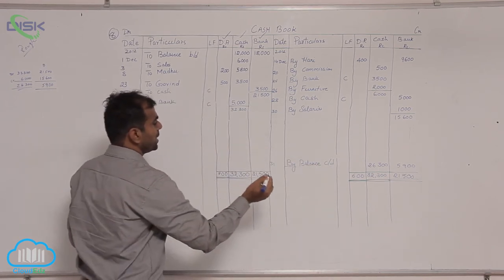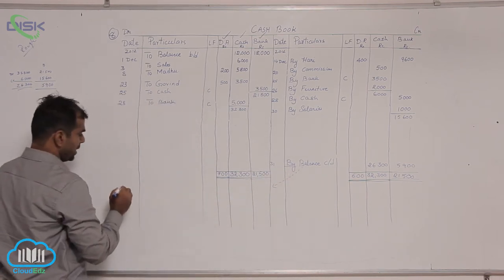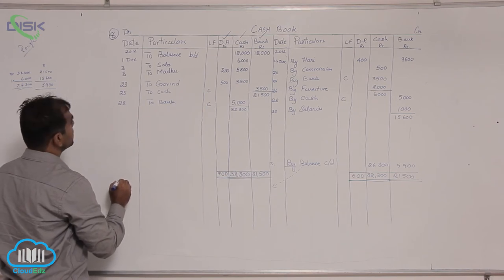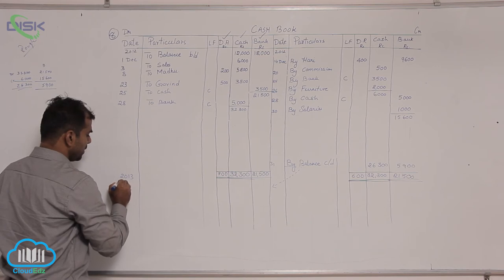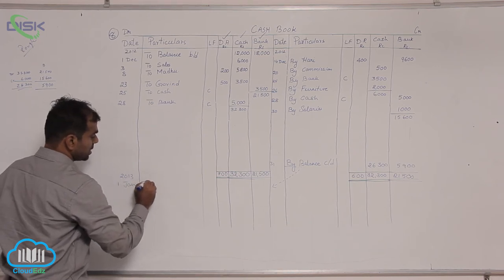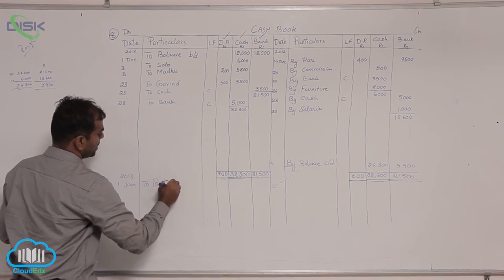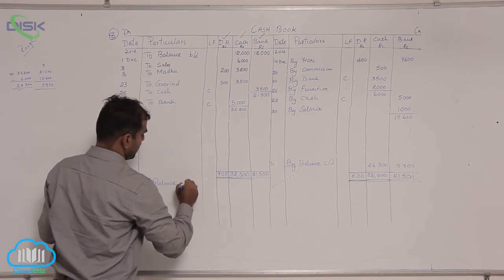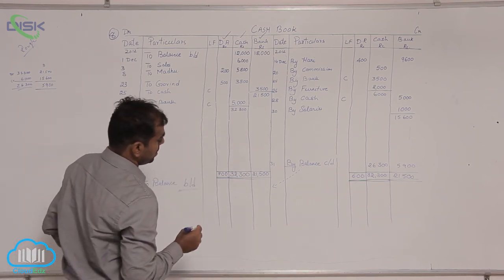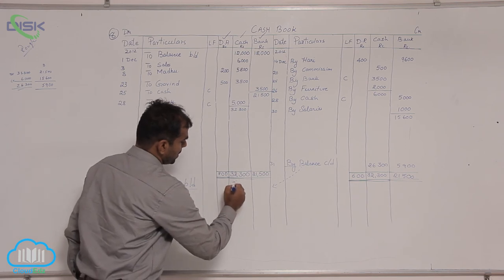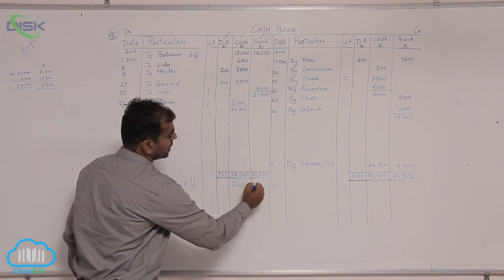So we have to reopen this for next month. Give the date, after December comes January. So it is 2013 the year, 1st January. Balance is entered on the debit side because opening balance, hence balance brought down because we are opening the account. So cash is 26,300 and bank 5,900.